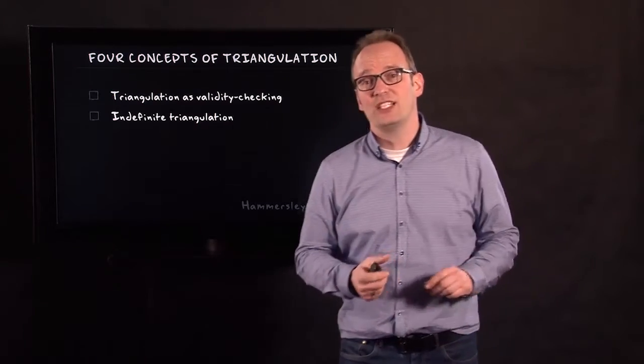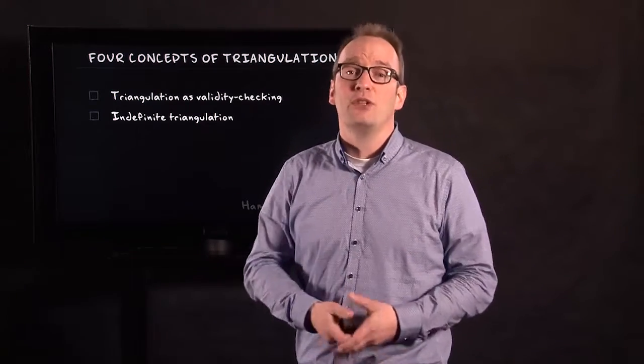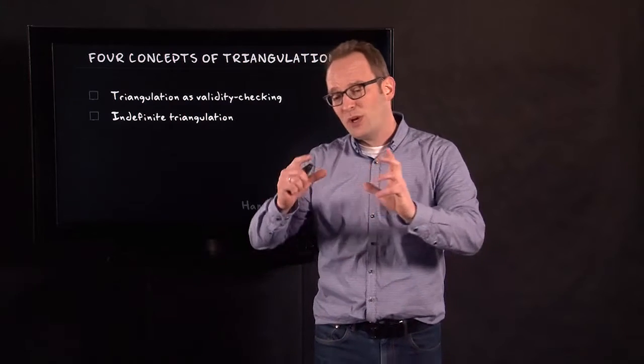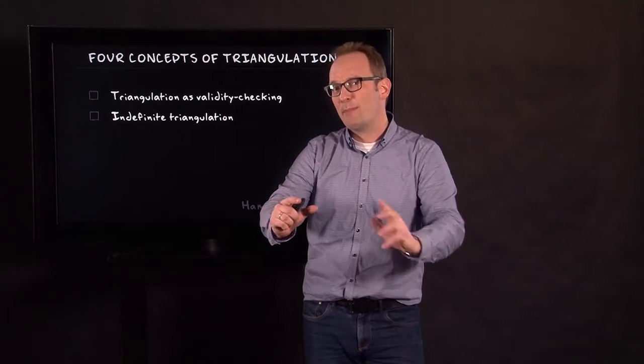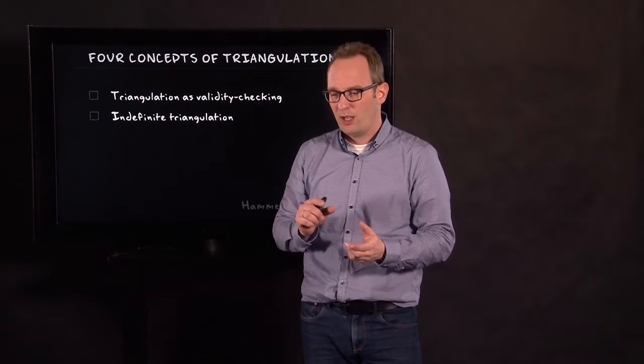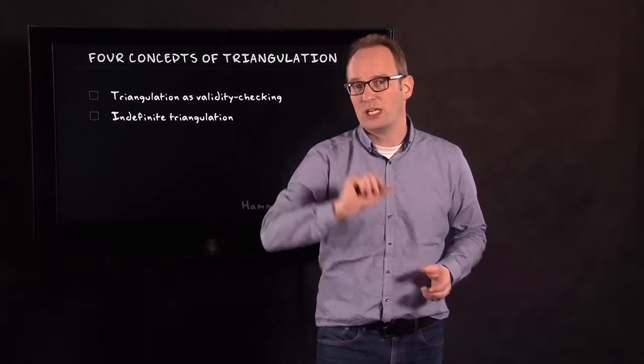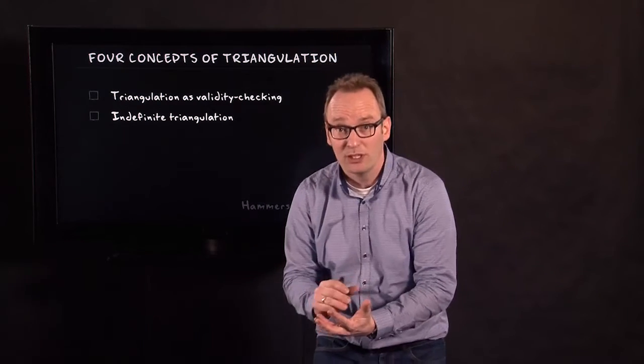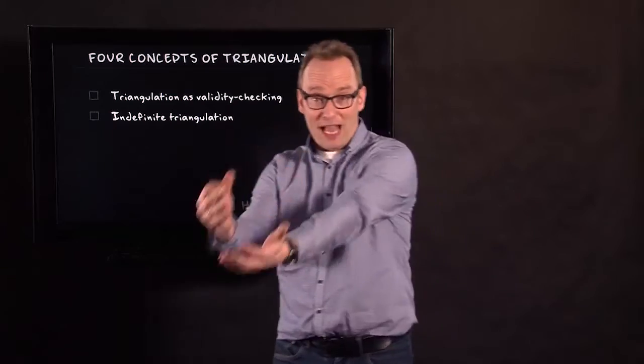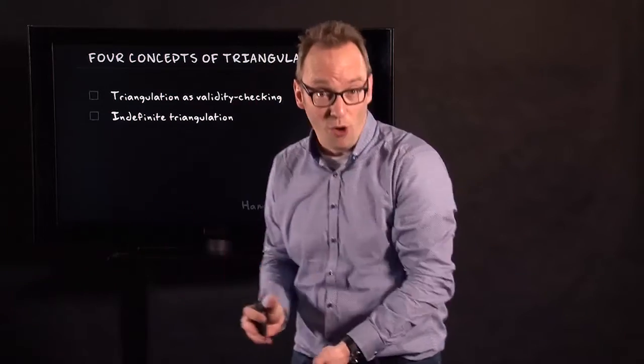The second type of triangulation was suggested by Aaron Cicourel, who said that we should do member checking, but member checking of a special kind. What we should do is observe a situation, write it down, describe it and then go back to the person that was involved in that situation, discuss it, write down the discussion.